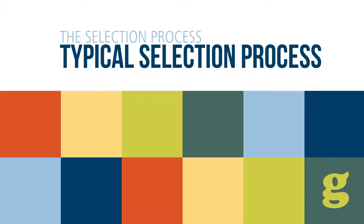The typical selection process, what some might call the hiring process, is a fluid yet flexible process of how an organization attracts, vets, and ultimately selects a new employee. Selection is the process of finding the right person for the right job at the right time. While the selection process might look somewhat different from organization to organization, there are essential elements that commonly define the process of acquiring talent. Let's take a look.